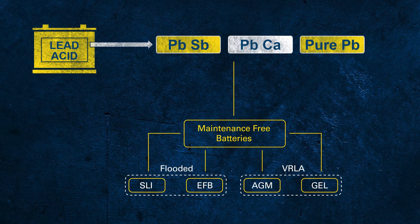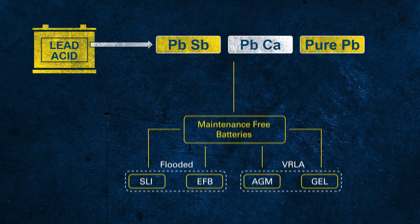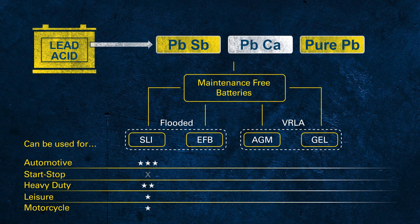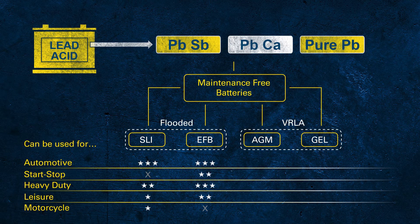As the battery technologies are different, not every technology can properly support all applications. The SLI battery is great for conventional vehicles but cannot be used in modern vehicles with start-stop functionality. In the EU, more than 90% of all newly manufactured vehicles come with start-stop systems to meet CO2 regulations. The EFB battery supports basic start-stop systems but reaches its limits in more aggressive start-stop systems or cars with many electrical consumers.